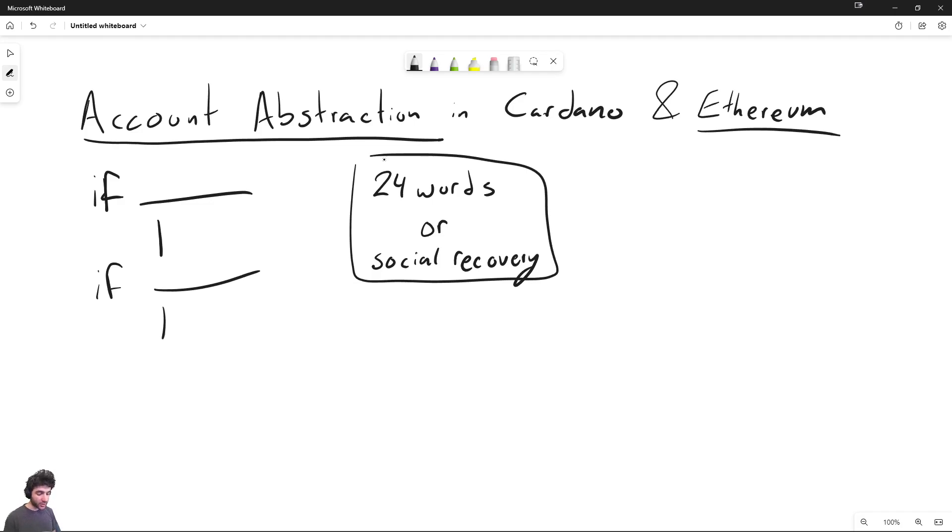So this kind of wallet where it's not just a private key, but private key and some extra logic is basically only really usable if you have account abstraction because then you can treat these special wallets the same as any other wallet. There's no downside from a UX perspective of using one of these extra fancy wallets compared to just a regular wallet.